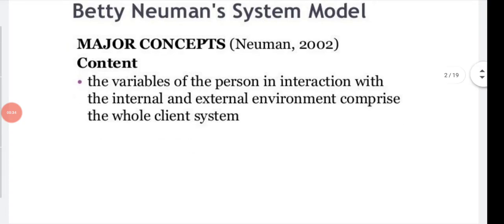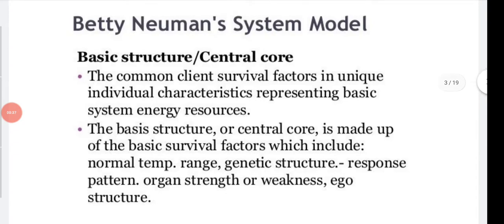The central core, or basic structure, consists of common client survival factors and unique individual characteristics representing basic system energy resources. This includes normal temperature range, genetic structure, response pattern, organ strength or weakness, and ego structure. All of these elements reside within the central core.